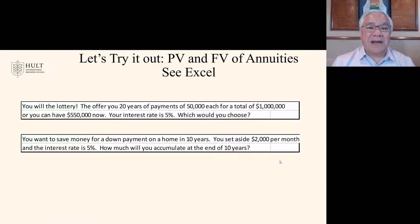All right, let's try out the bottom two calculations. They deal with annuities or a series of payments. But let's hopefully make it a real life example because you just won the lottery. So you won the lottery and the lottery commission gives you a choice. Which one do you want? $50,000 for 20 years or $550,000 now? Right, so that's the first scenario. The second is you want to buy a home and you want to set aside some money. $2,000 per month for 10 years. And the interest that you're going to earn is 5% per year interest. So the question is at the end of that 10 year period, how much would you have accumulated to put as a down payment on your house?